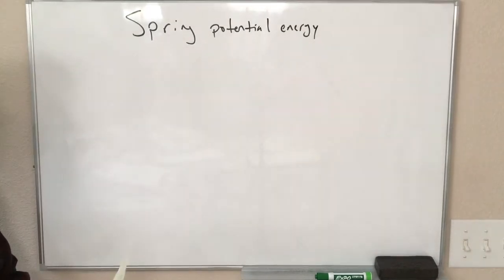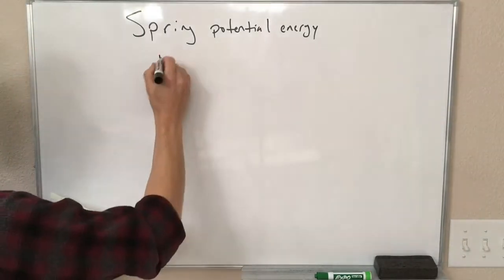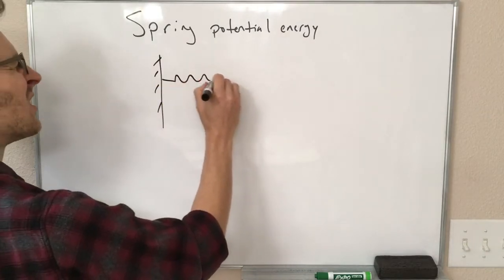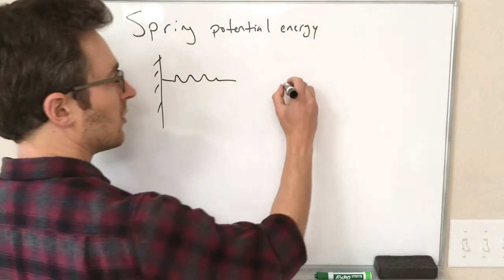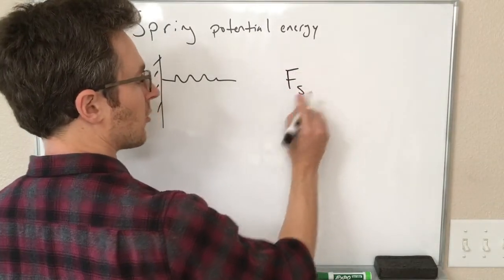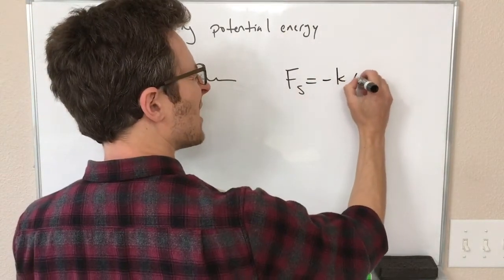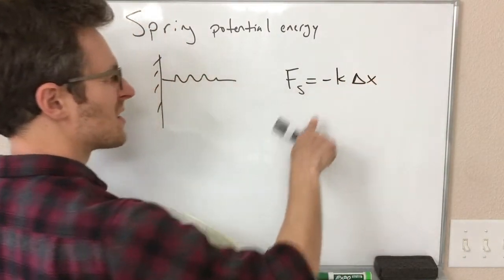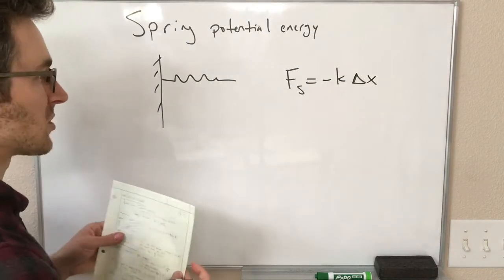So if we have a spring attached to a wall, that spring can be compressed or stretched, and the force that spring exerts on us is minus k delta x, F_s = -kΔx. The minus sign here is just saying that it opposes the direction we push on it.